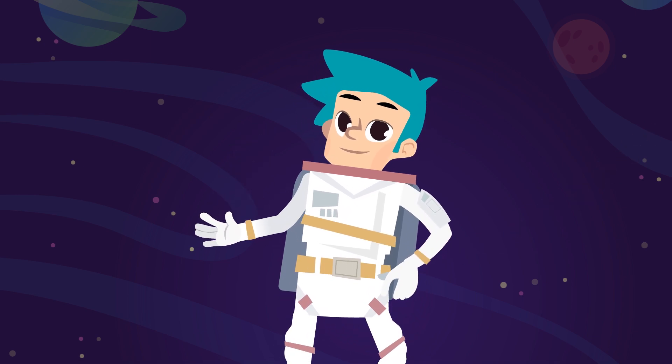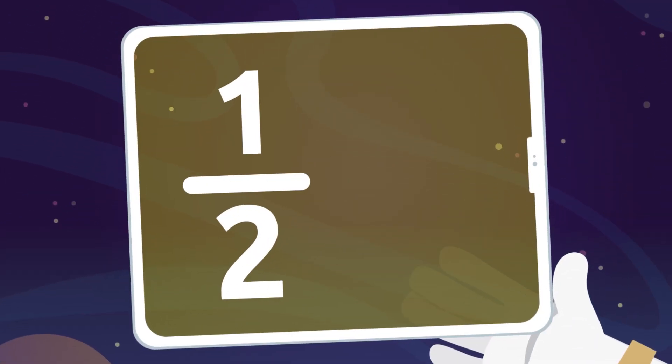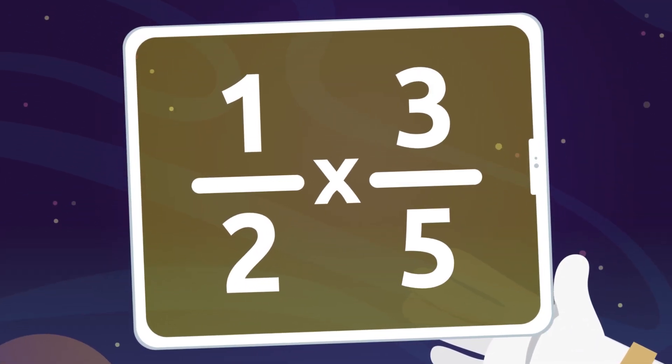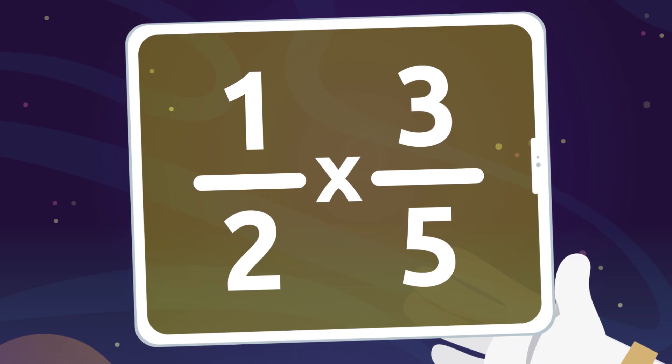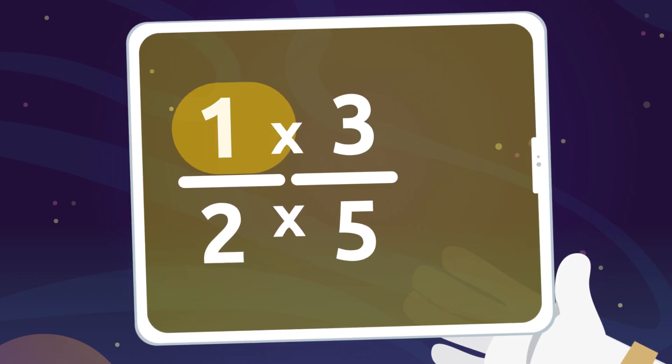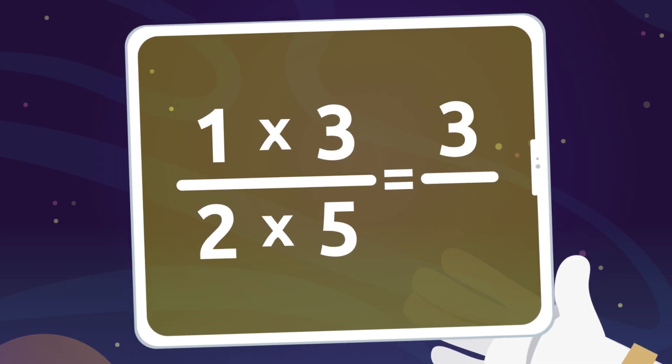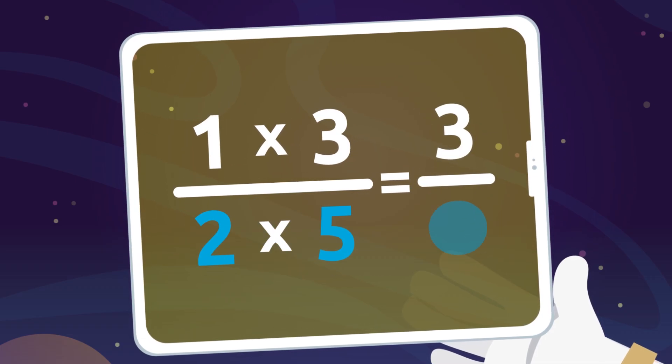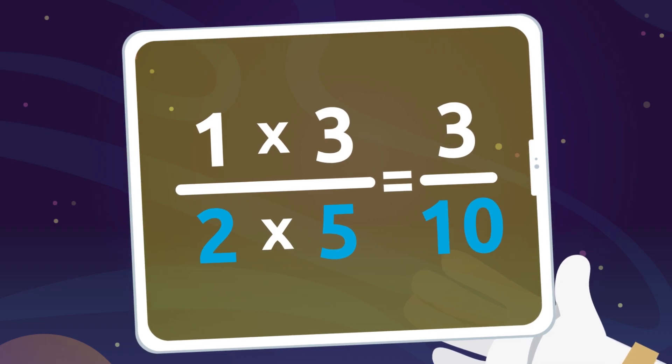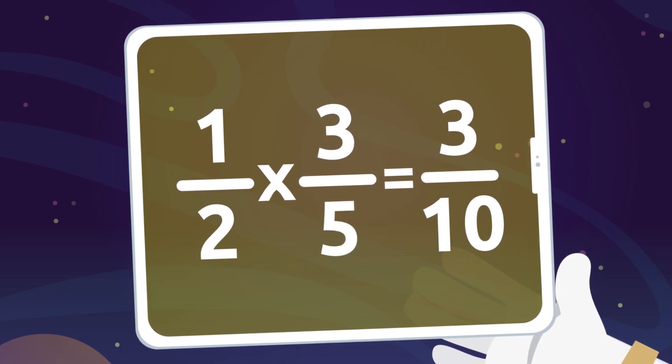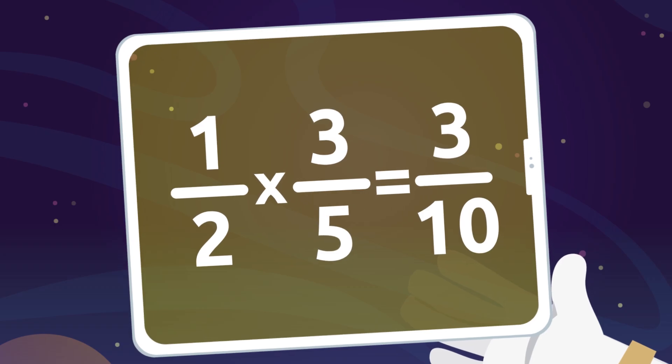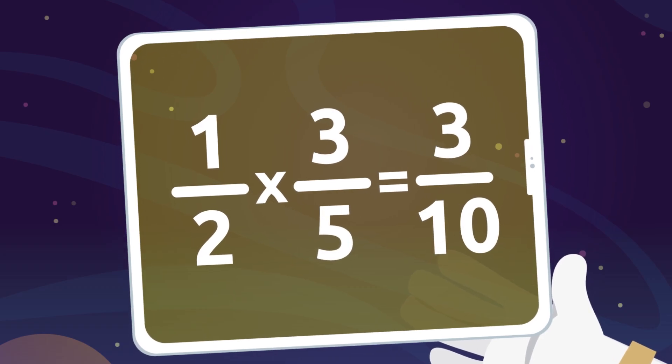Let's look at an example. We need to multiply one-half by three-fifths. To do that, we're going to multiply the numerators: one by three, which equals three. And then we're going to multiply the denominators: two by five, which equals ten. So one-half multiplied by three-fifths equals three-tenths. Well done!